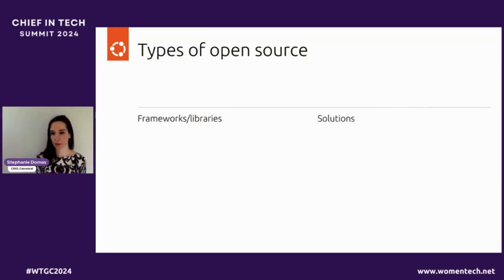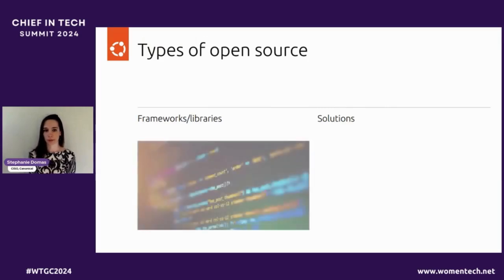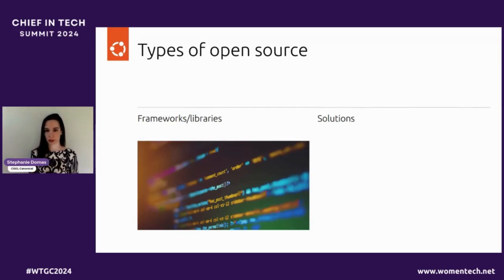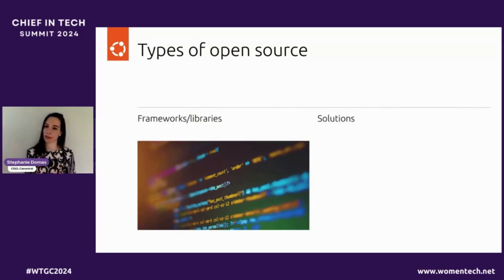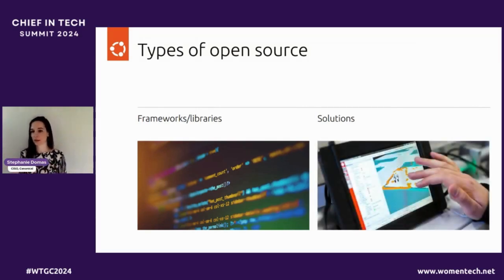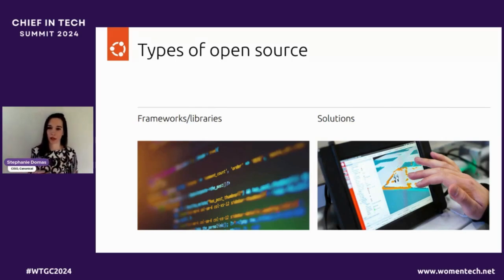There are two common types of open source. First, frameworks and libraries — a piece of code that serves a specific purpose, like a graphing library or communications library. It's meant to be a part of something bigger; standalone, it doesn't necessarily have the ability to be its own solution. Then you have solutions — pieces of software that can be standalone and perform a function or behavior, like a game or a chat program that you could use standalone.